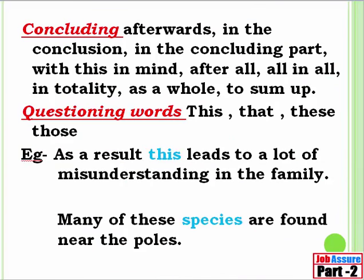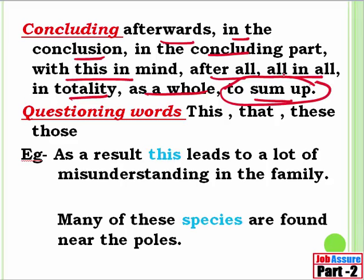Then we have keywords for the concluding part. The details — the central portion — also have a concluding part. Words like: afterwards, in the conclusion, in the concluding part, with this in mind, after all, all in all, in totality, as a whole, to sum up. Suppose we are talking about the cleanliness drive in India and the last sentence is 'to sum up, the citizens need to come forward and it is not just the responsibility of the government to clean India' — 'to sum up' tells you this is the last part of the central portion, and finding the last line gives you a very clear idea of the order.